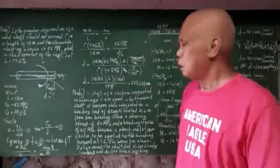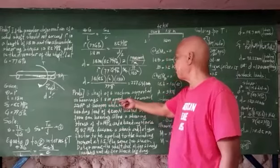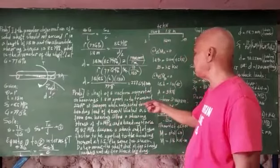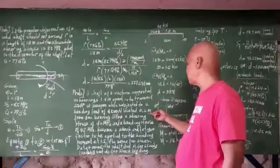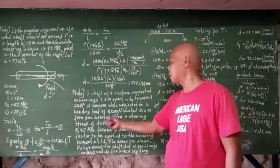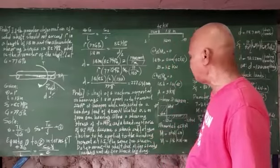Now we have here another problem. A shaft of a machine supported on bearings 1.8 meters apart is to transmit 250 horsepower at 200 RPM, while subjected to a bending load of 4,500 newtons located 0.6 meters from one bearing. Allow a shear stress of 40 mega Pascal and a bearing stress of 82 mega Pascal.